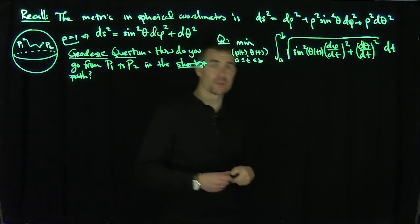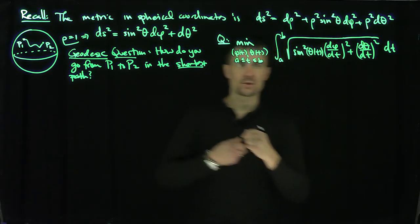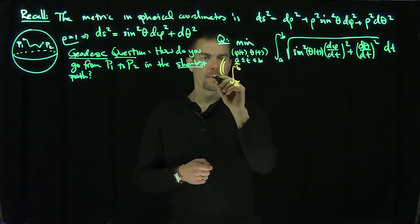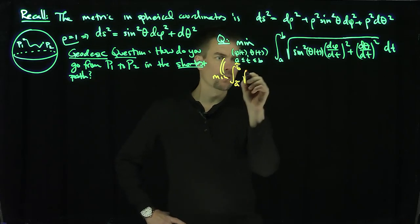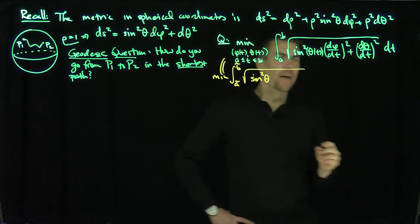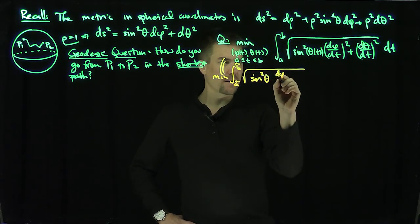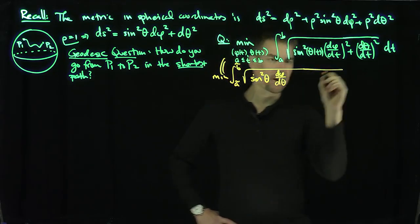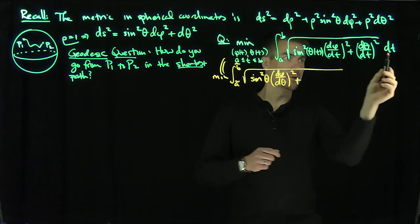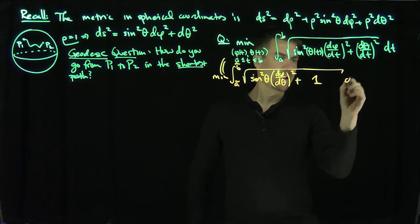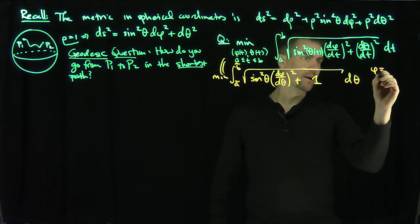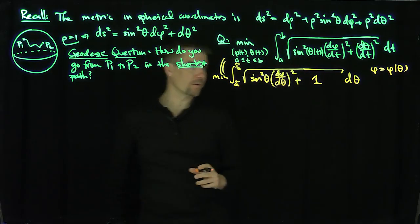I'm going to turn this into a one-dimensional problem using the chain rule. By the chain rule, it suffices to look at integrals of the form: the integral from ã to b̃ of the square root of sin²θ (dφ/dθ)² + 1 dθ. So we're thinking of φ as a function of θ by the implicit function theorem, and I can do this locally on the sphere.